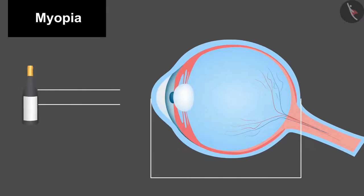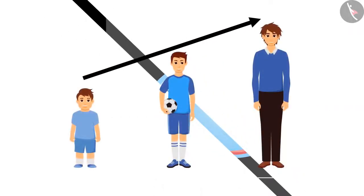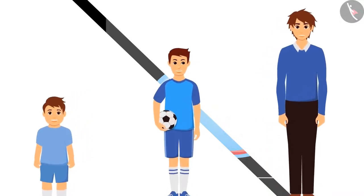This defect is common with the growing children because with time the size of the eyes increases. These are the same children whose mention was there in the beginning of the video. If you ask them, they will say that we do not see the distant objects clearly.